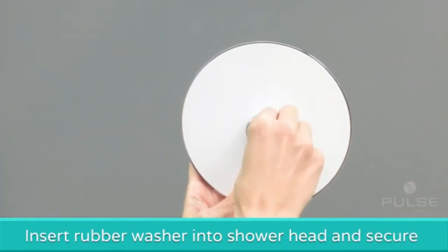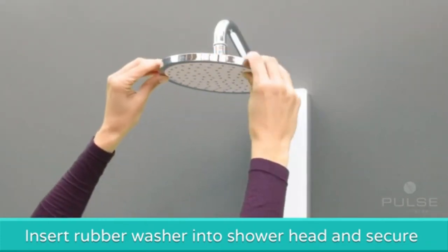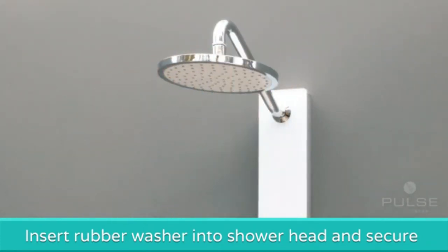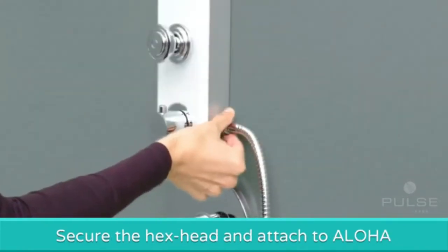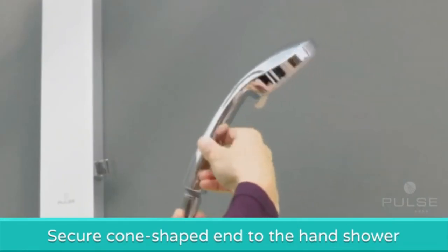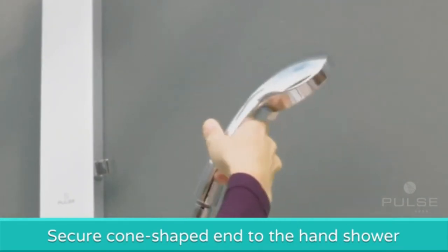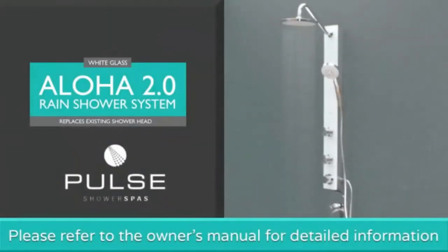Insert the washer into the shower head and attach to the Aloha. Insert the washer into each end of the shower hose. Secure the hex head to the Aloha and the cone shaped end to the hand shower. Installation of your Pulse Shower Spa is now complete.